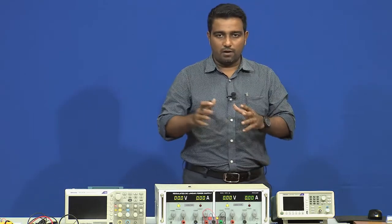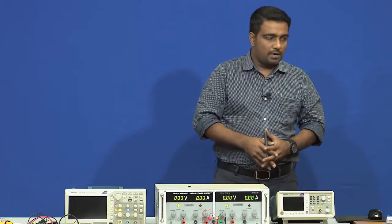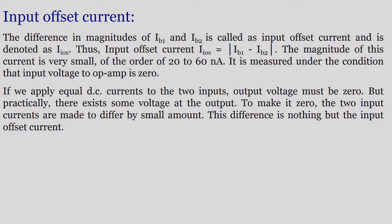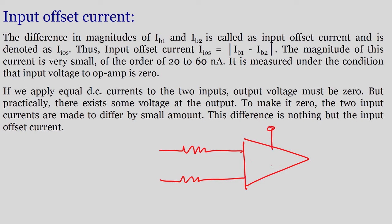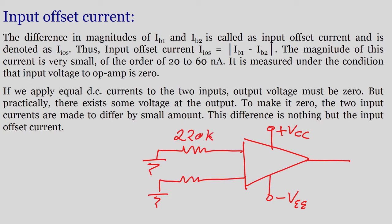In this class we will see what input offset current means. The same circuit used for input bias current applies here: two 220K resistors, plus VCC and minus VEE supply rails, output voltage measured at the output, and both input terminals grounded.